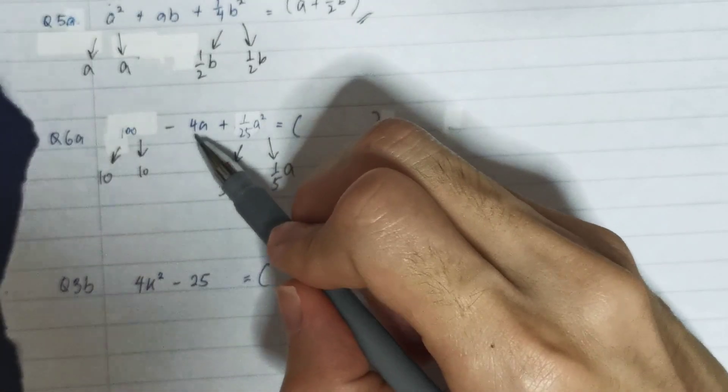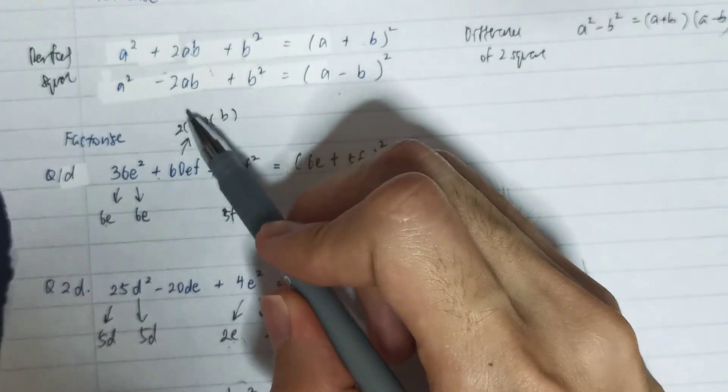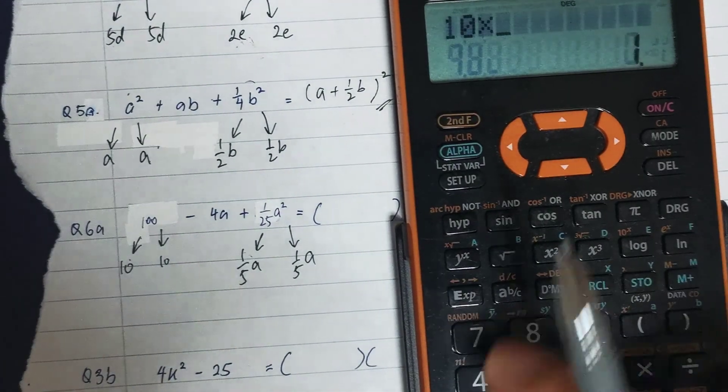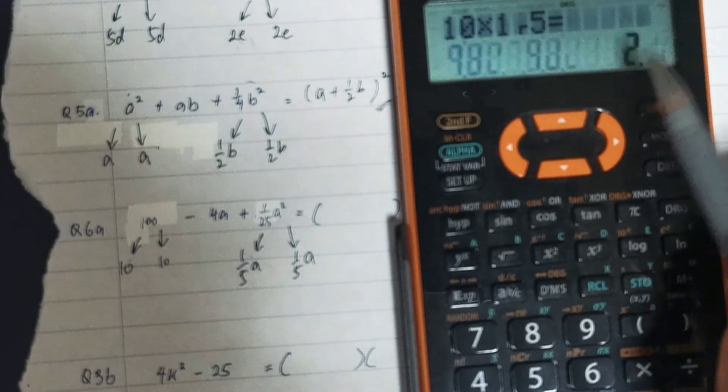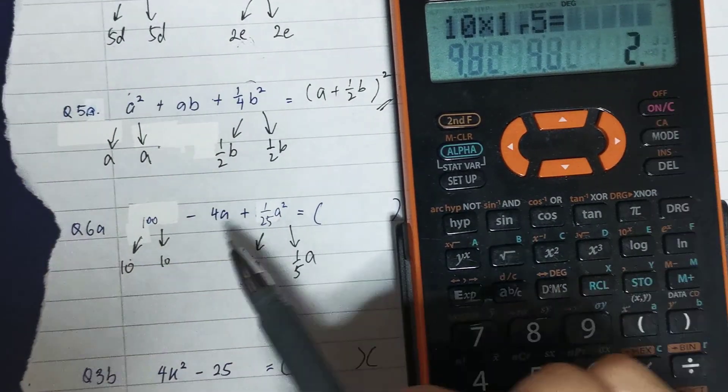So now let's check whether the middle number, -4a, is it a form of -2 times ab. So 10 times 1/(5a) is 2a. So 2a times -2 gives me -4a.